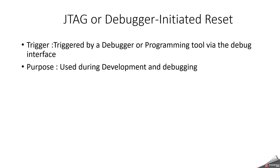JTAG or debugger initiated reset is triggered by a debugger or programming tool via the debug interface. Its purpose is use during development and debugging. These are all the general reset types available in microcontrollers.